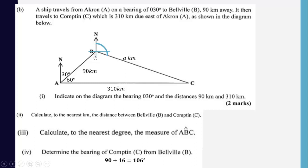Alternatively, using the bearing angle of 30 degrees and knowing angle ABC is 104 degrees: 104 − 30 = 74, and 180 − 74 = 106 degrees, confirming the bearing of C from B is 106 degrees.